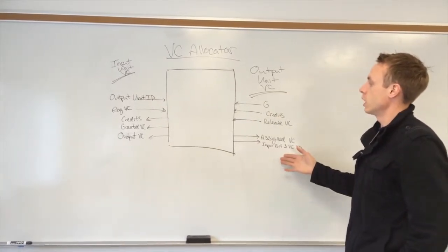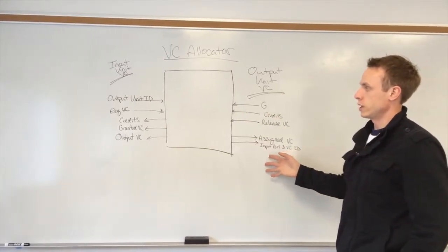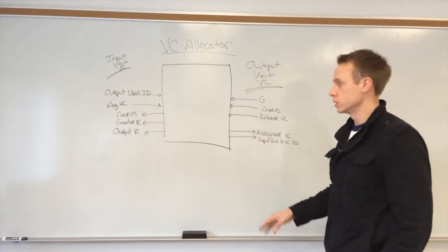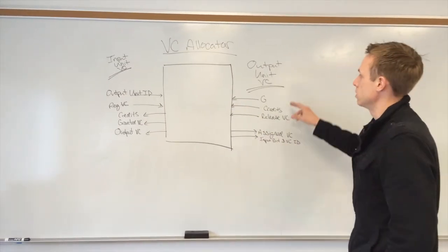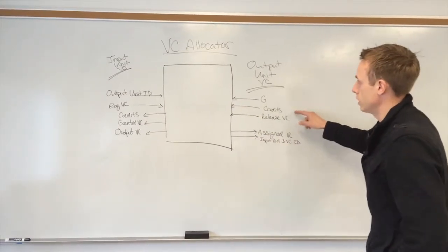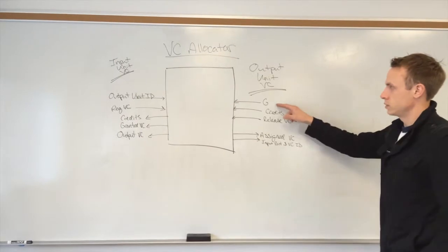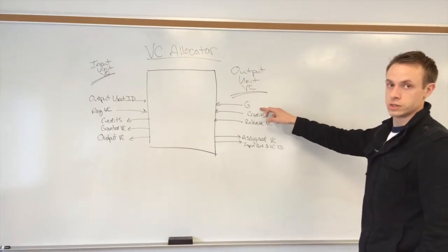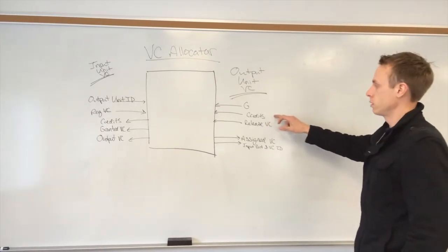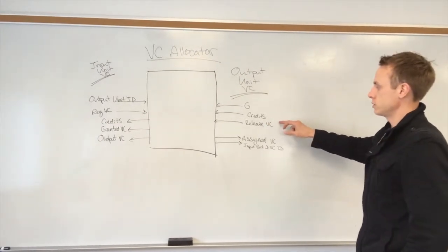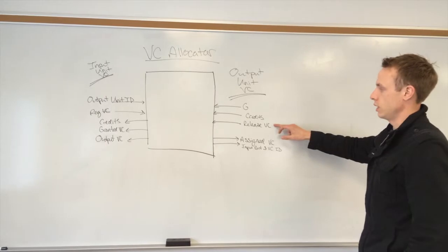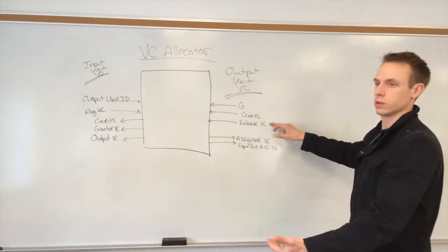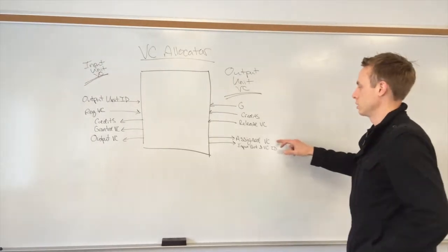For our implementation, we actually implemented a single VC allocator for a router. In order to do that, you have to feed in the states of the output unit VC, its credits, and a signal to tell it when it's released and it's actually transmitted its final flit.